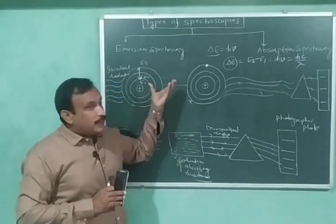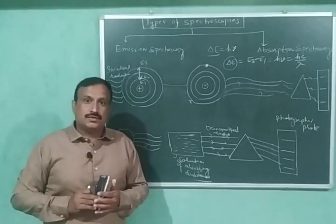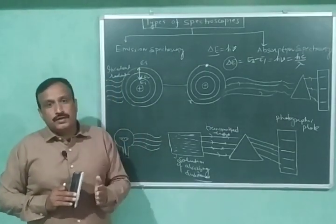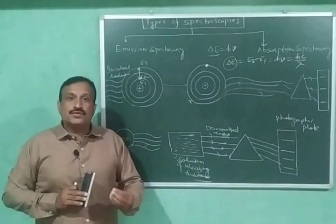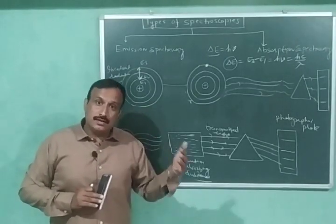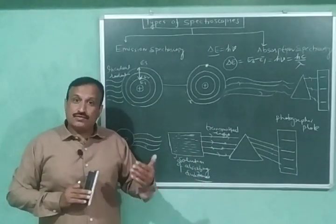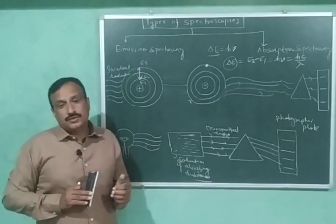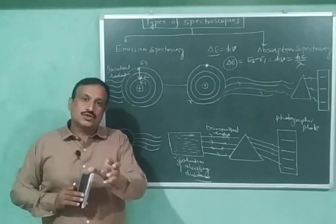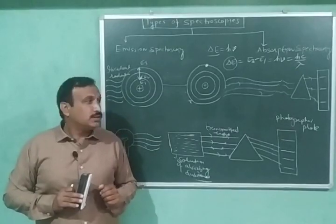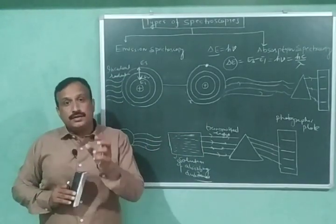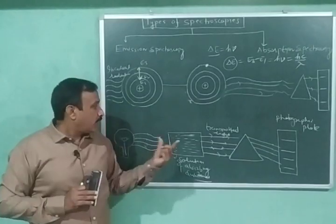Emission spectroscopy is very useful for the study of atoms. However, if we want to study the structure of organic compounds, we prefer absorption spectroscopy, because most organic compounds are unstable under the drastic conditions of intense heat and electric discharge that are required for emission spectroscopy. Therefore, absorption spectroscopy is used to determine the structure of organic compounds. Further, absorption spectroscopy is classified into different categories depending upon the type of electromagnetic radiation absorbed by the substance.